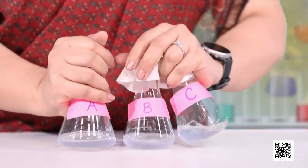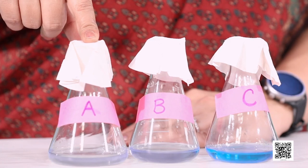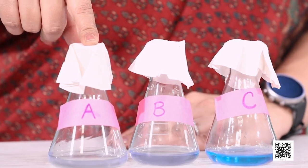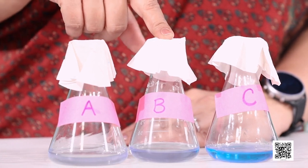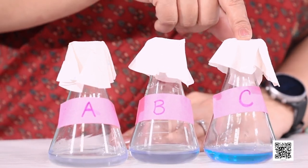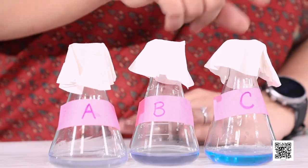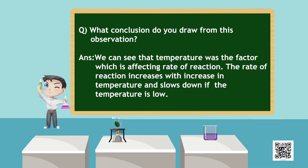Notice the change in all three flasks. The solution in the warmer flask has already turned back to colorless, indicating that the reaction is almost complete. The blue color of solution in the flask at room temperature is fading slowly, and the solution in the flask at lower temperature is still blue. We can see that temperature is the factor affecting the rate of reaction. The rate of reaction increases with increase in temperature and slows down if the temperature is low.